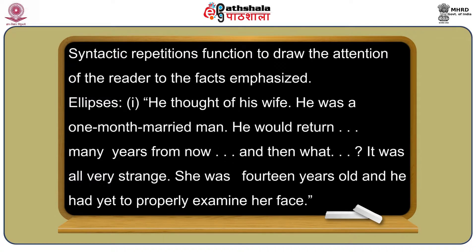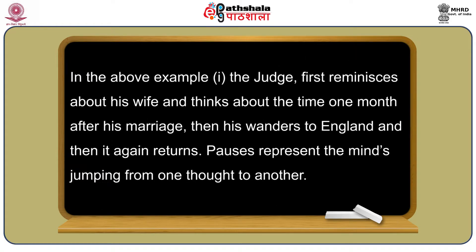Ellipsis refers to gaps represented by three dots in the text, and this refers to either intentional omission of a linguistic item or a process of ongoing thought. For example: 'He thought of his wife. He was one month married man. He would return... Many years from now... And then what?... It was all very strange. She was 14 years old and he had yet to properly examine her face.' The judge is thinking about his wife and thinks about the time one month after his marriage, then his journey to England and return. Pauses in such quick reminiscences are natural, for they represent jumping of thought from one subject to another.